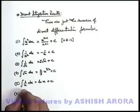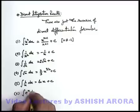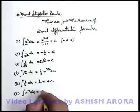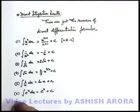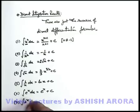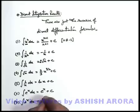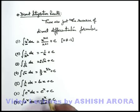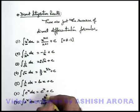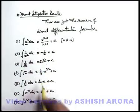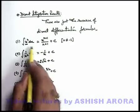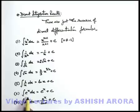If we talk about integration of e^x dx, the result will be e^x + C. And if we talk about integration of a^x dx, its result will be a^x / ln(a) + C. All these results you can verify just by differentiating — if you differentiate these results, you are going to get all these integrands.